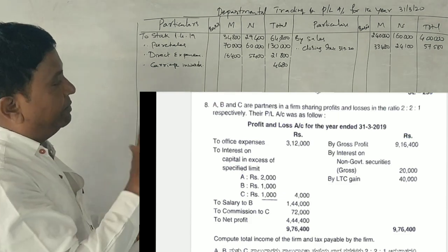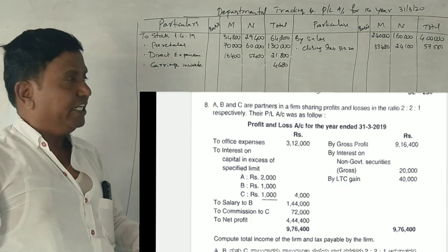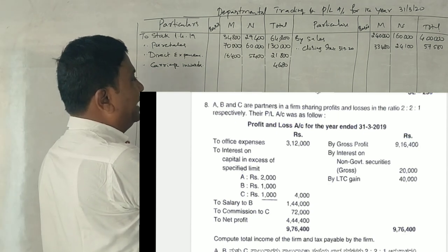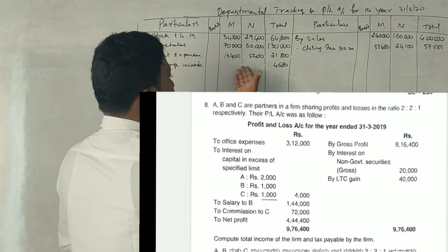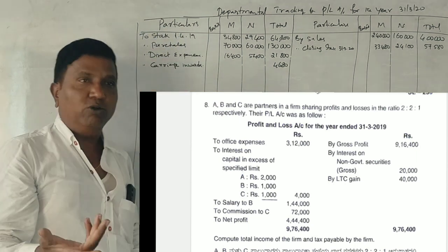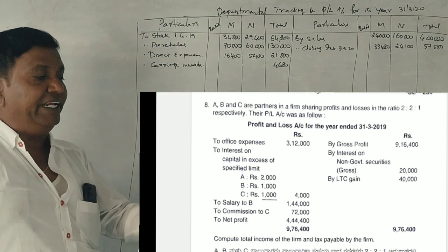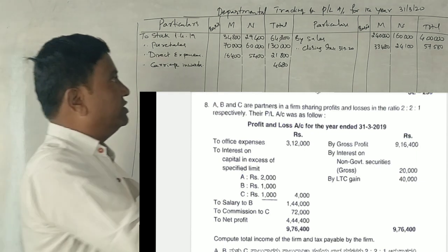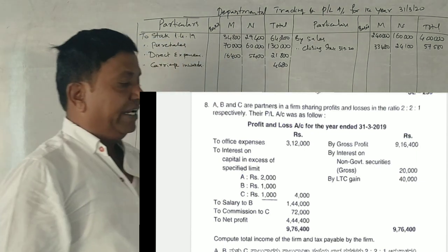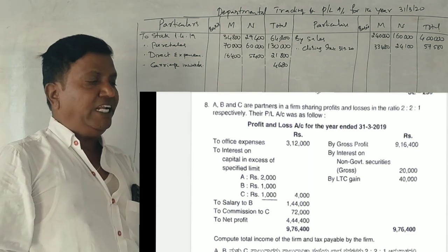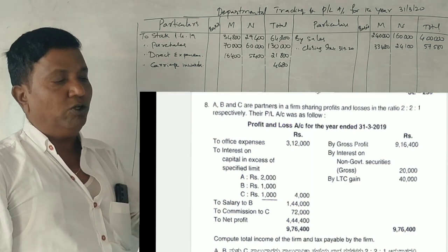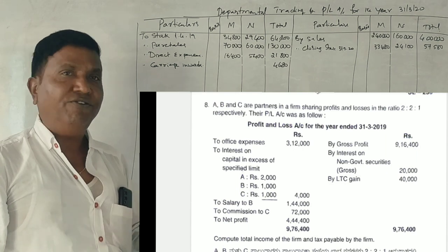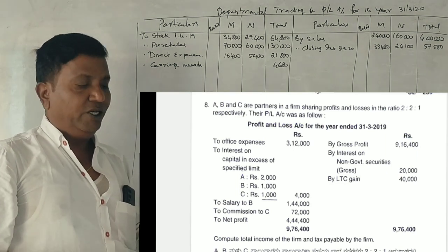Now, we have the M Company — M Department and N Department. This is an adjustment. Stock on 31st March 2020 is the closing stock. Transfer of goods from Department M to Department N — the cost price was 840 rupees. This is an adjustment of goods between departments.